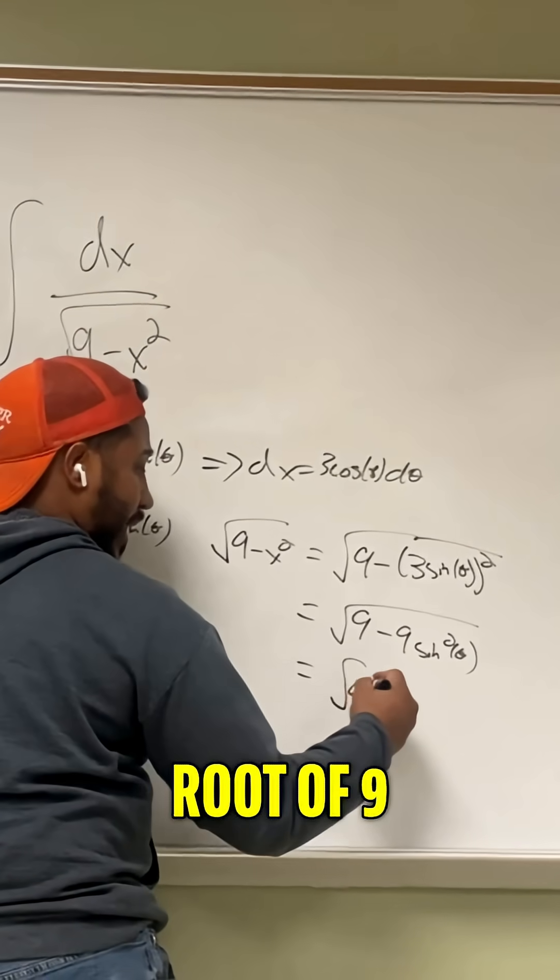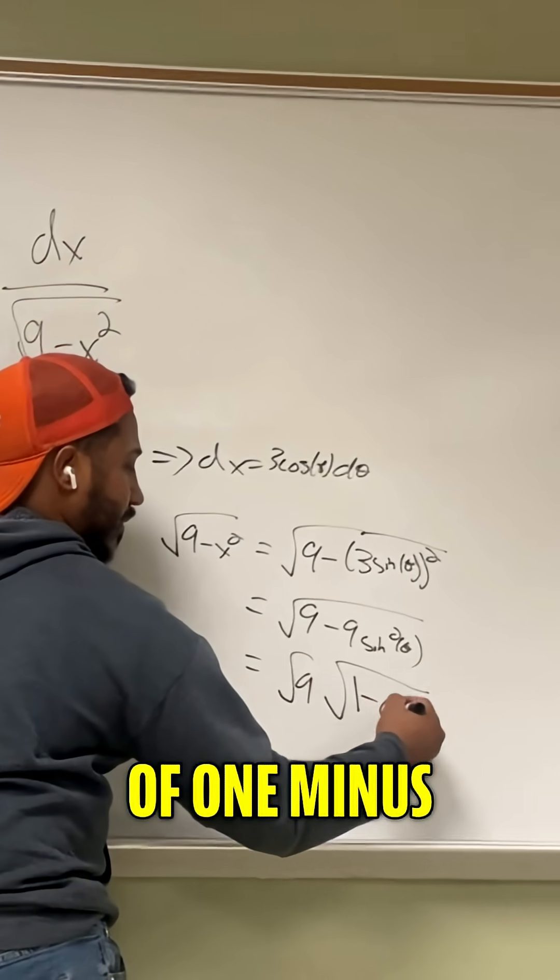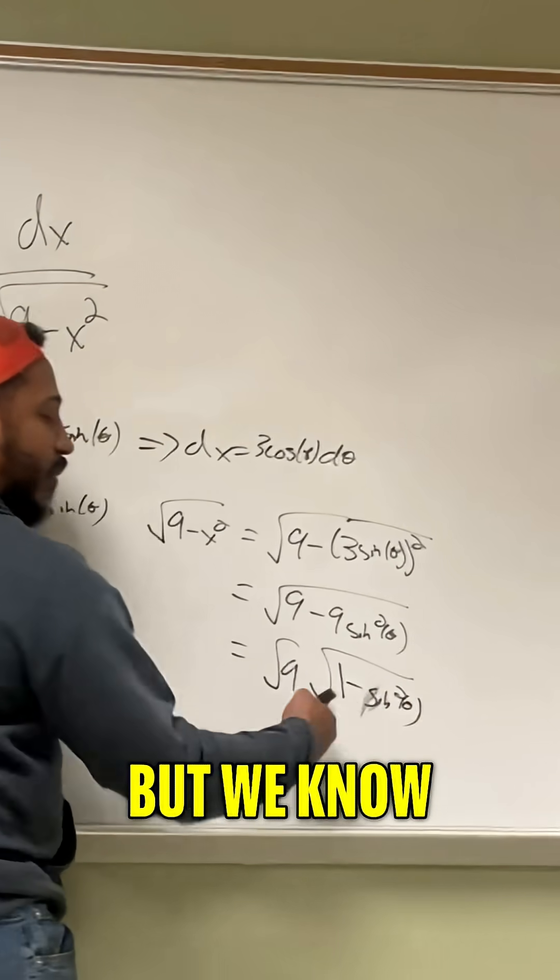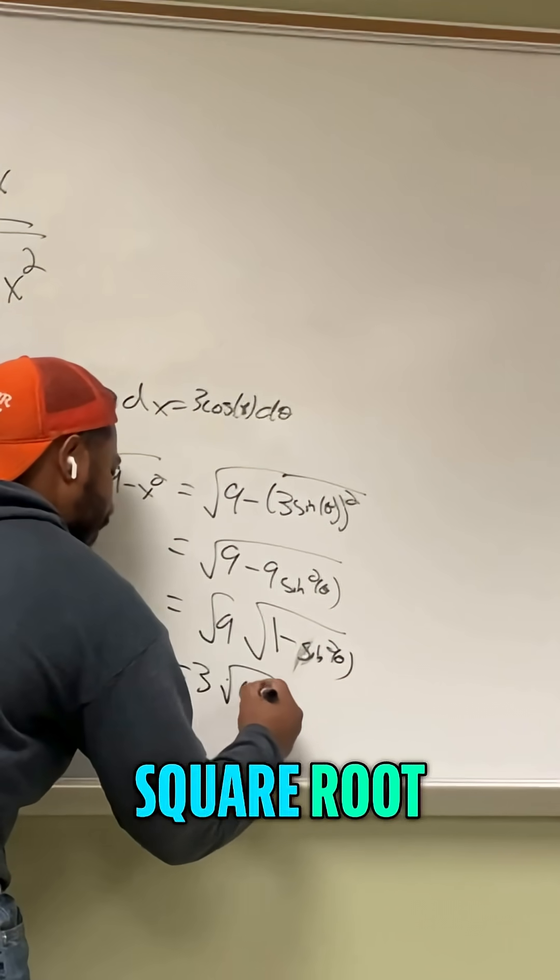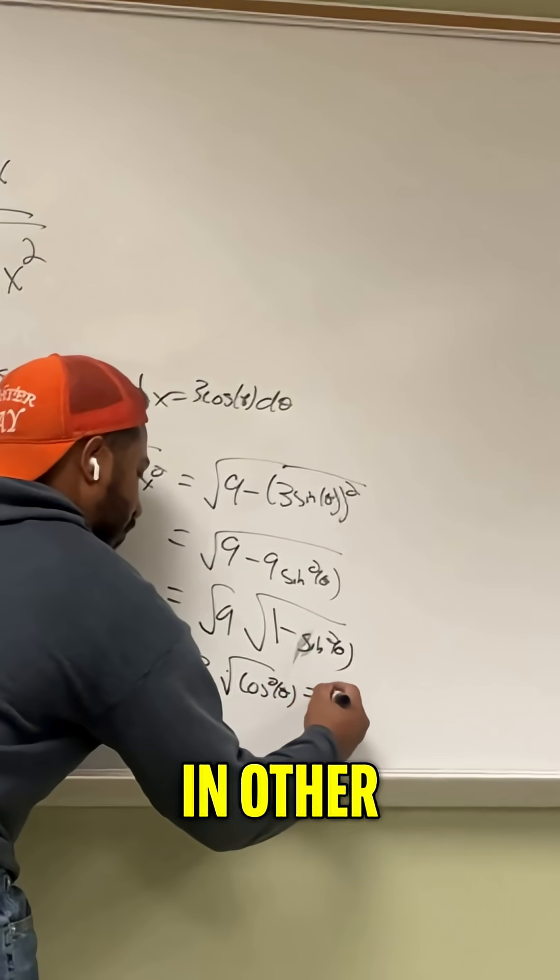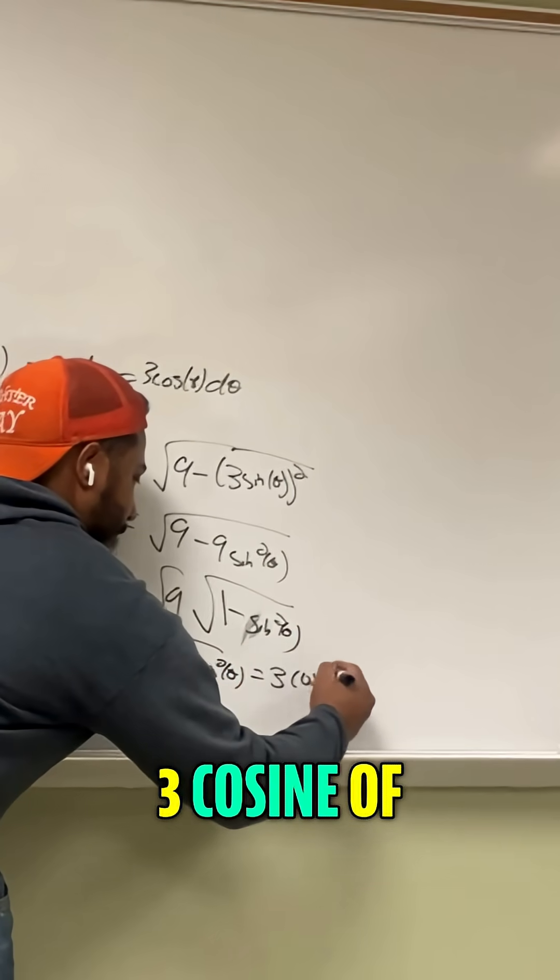In other words, factoring out a 9, we get the square root of 9 times the square root of 1 minus sine squared of theta. But we know 1 minus sine squared is cosine squared. So that's 3 times the square root of cosine squared of theta, or in other words, 3 cosine of theta.